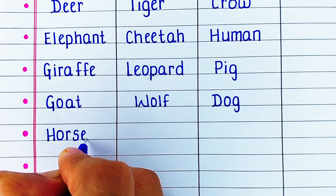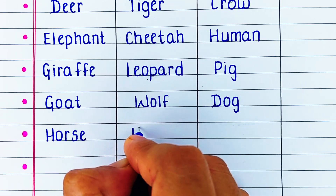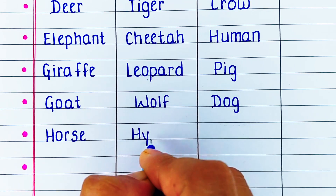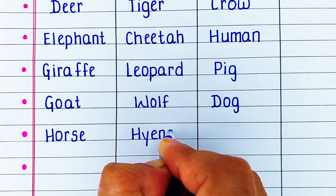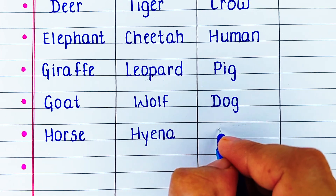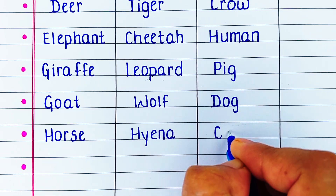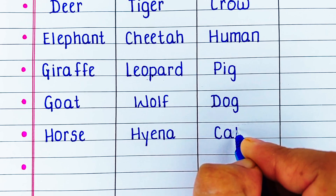Next herbivore in our list is horse. Carnivore is hyena. And omnivore is cat.